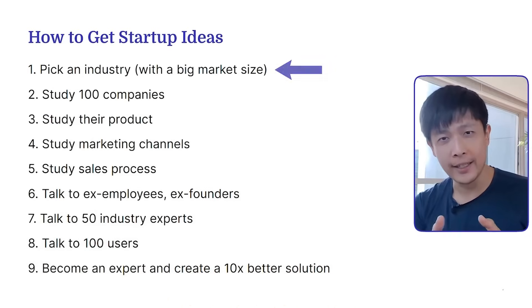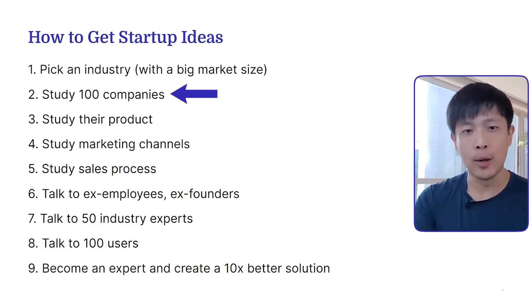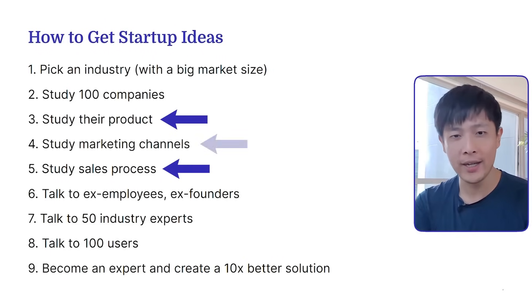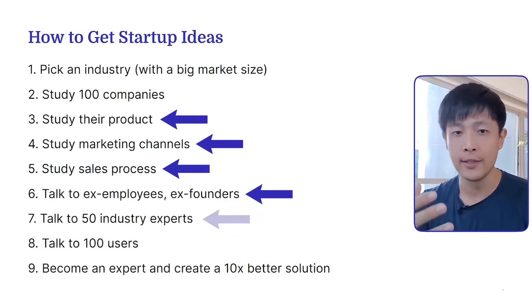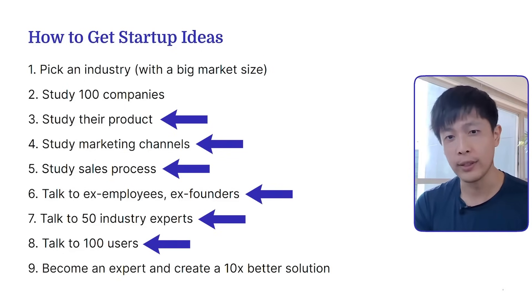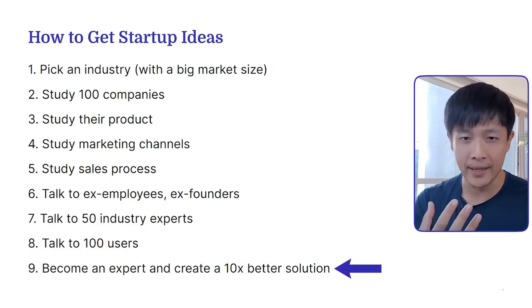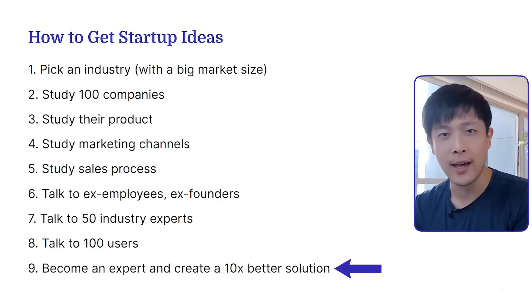I'd start by picking an industry with a big market size that I'm passionate about. I'd find a hundred companies and study their sales, their products, and their marketing. I'd talk to ex-employees, ex-founders, and industry experts, and I'll talk to at least a hundred users to really understand their problems. Through this process, I'll become an expert myself and use all this information to create a product and solution that is 10 times better than whatever else is already out there.